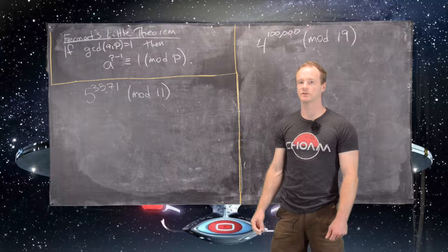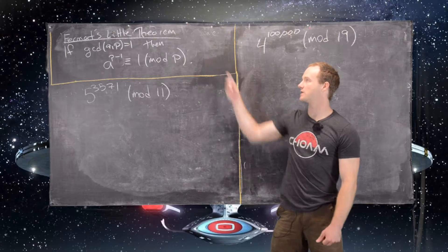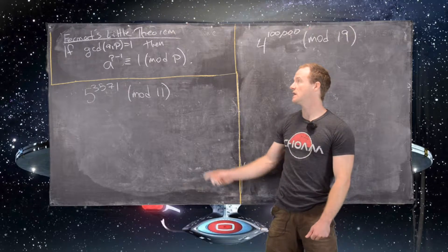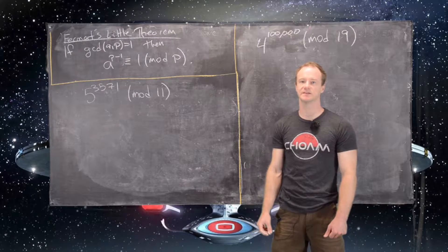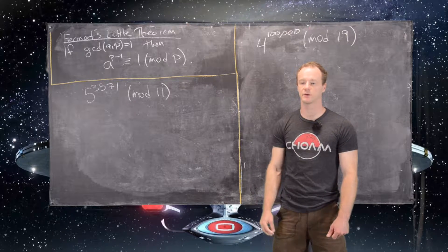In this video we're going to look at two examples of applications of Fermat's Little Theorem. So just as a reminder, Fermat's Little Theorem says the following: If the GCD of A and P is equal to 1, then A to the P minus 1 is congruent to 1 mod P.